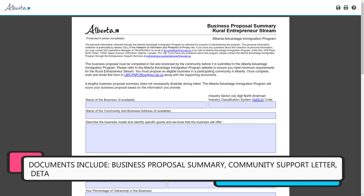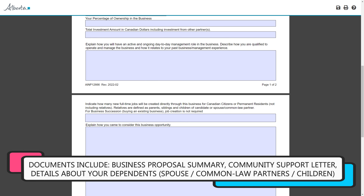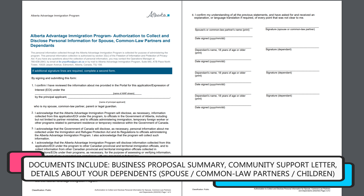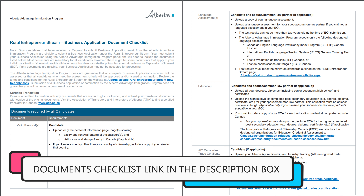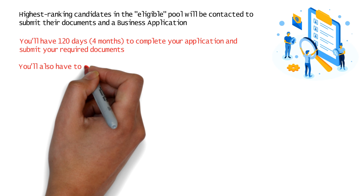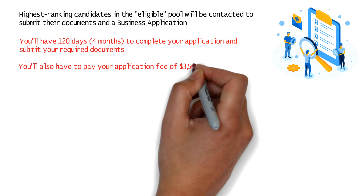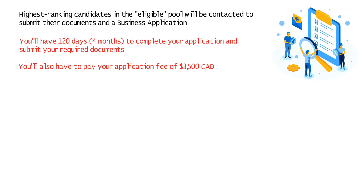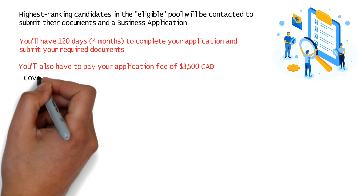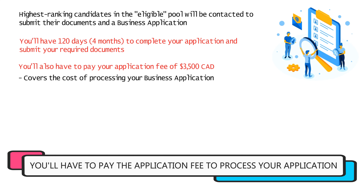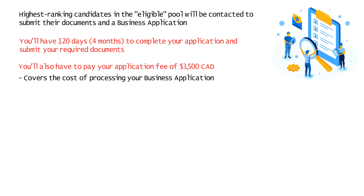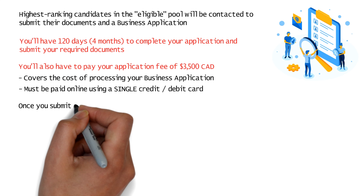Your documents may include a business proposal summary, a community support letter, and details about your spouse or common-law partner and children if applicable. I'll provide a link for the complete documents checklist in the description box. You'll also have to pay a non-refundable application fee of $3,500 Canadian dollars at this stage. This business application fee covers the cost of processing and is required whether your business application is approved or not. It must be paid online using a single credit or debit card.